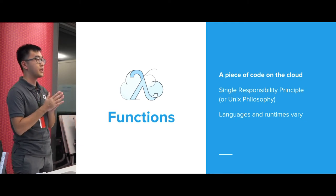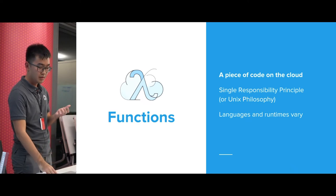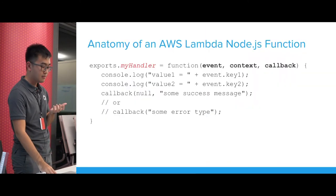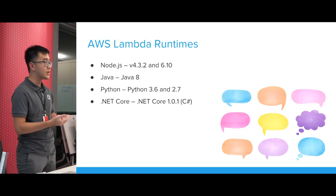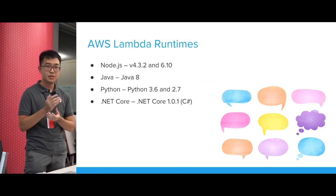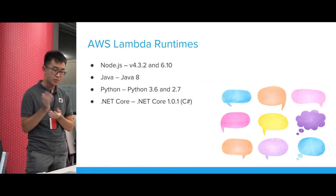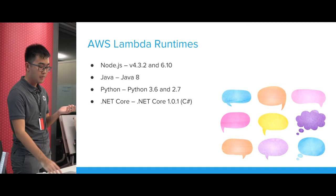Each serverless platform has different languages and runtimes. We've already seen a Node.js function. For AWS, the available languages and runtimes you can use include Node, Java, Python, and .NET.